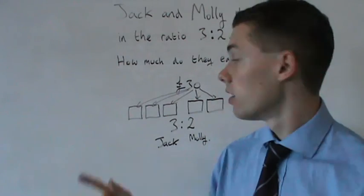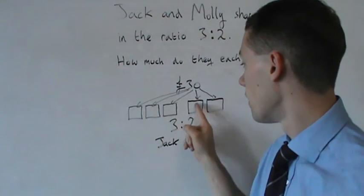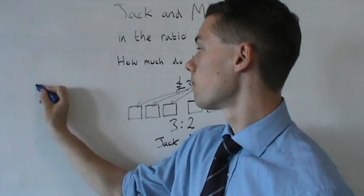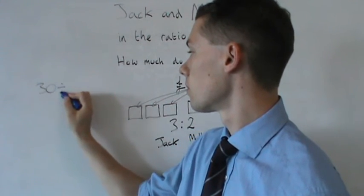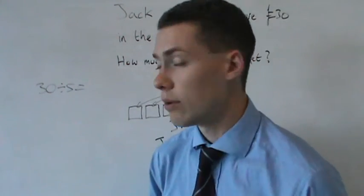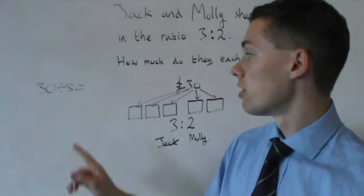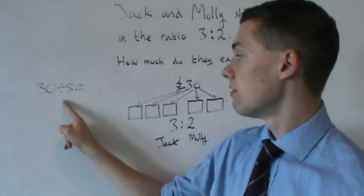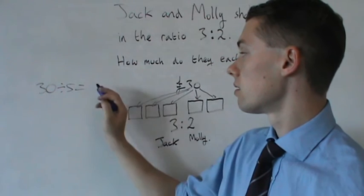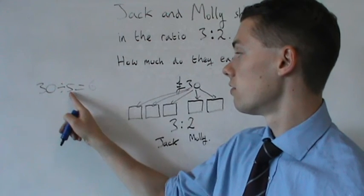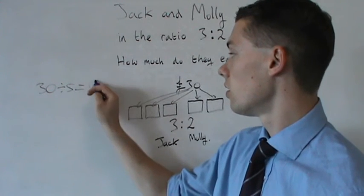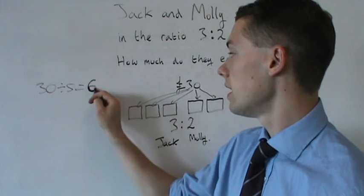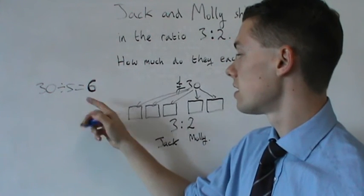Another way of saying this could be 30 divided by 5, which I can write down here. Now we should know from our mental arithmetic that 30 divided by 5 equals 6. 6 lots of 5 is 30. So that means that inside each box I've got 6.